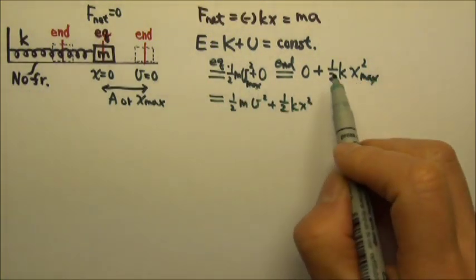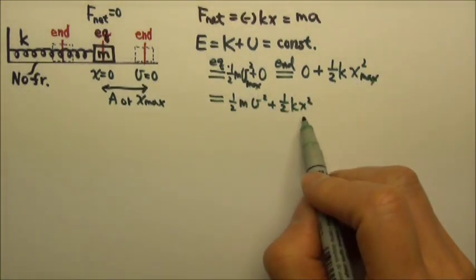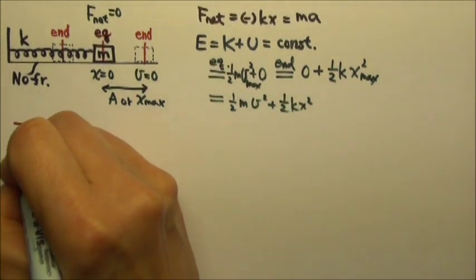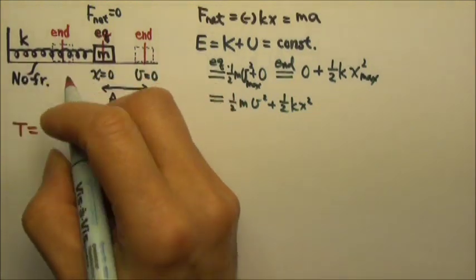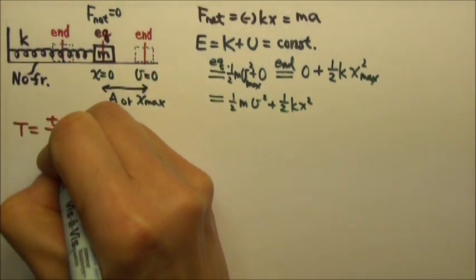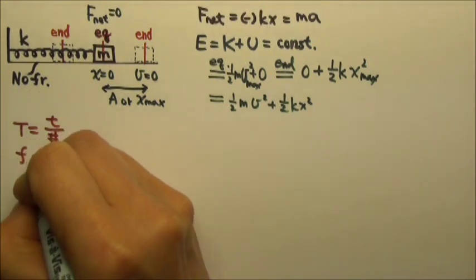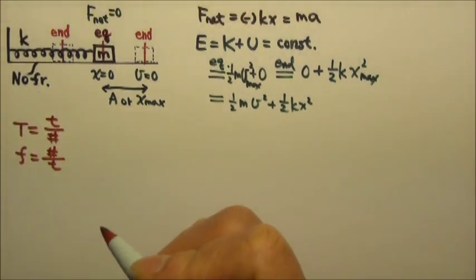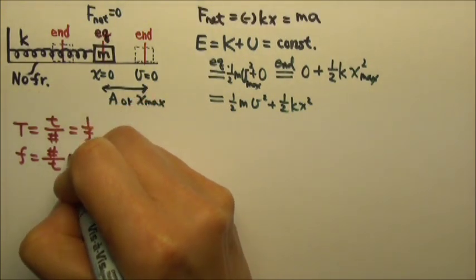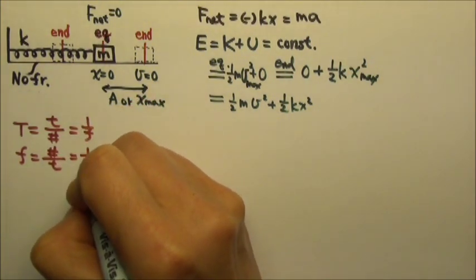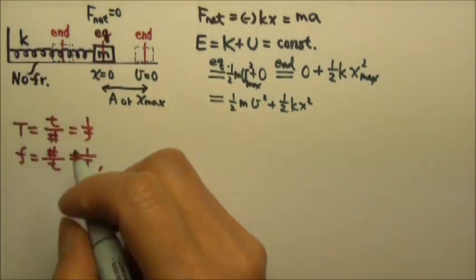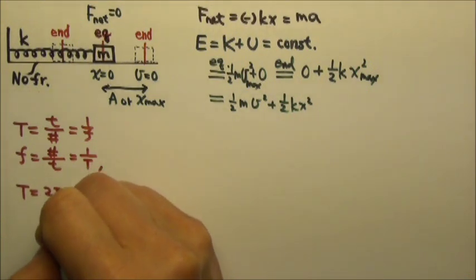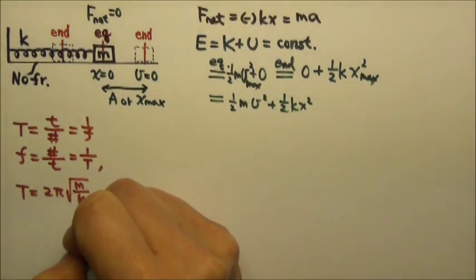So if we want to relate the speed to x, this energy equation is what we use. The period of the oscillation is defined as the time per event, and the frequency is the number of events per unit time — so period is one over frequency and frequency is one over period. For this simple harmonic oscillator, the period is 2π times the square root of m over k.